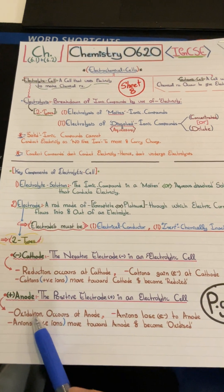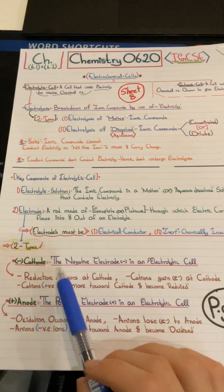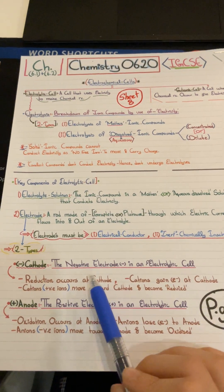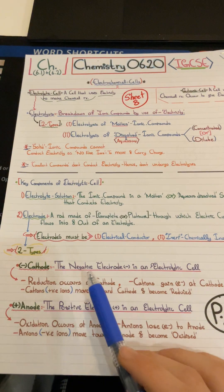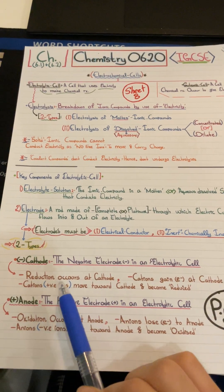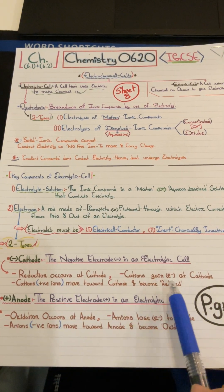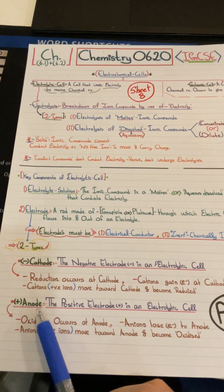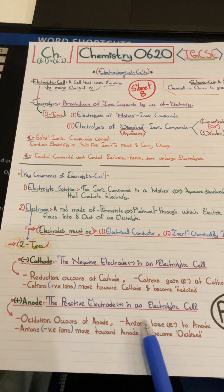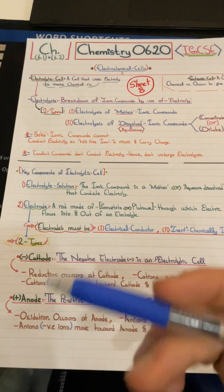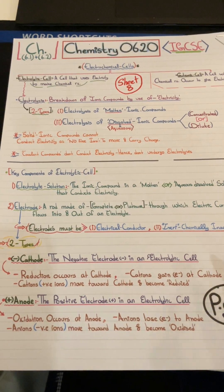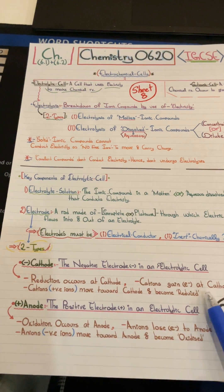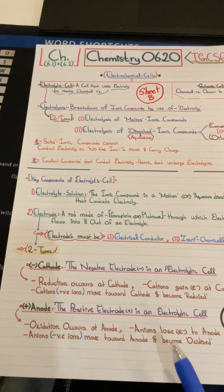The cathode is the negative electrode in an electrolytic cell. Reduction — the gain of electrons — occurs at the cathode. Cations migrate towards the cathode to gain electrons. The anode is the positive electrode. Oxidation — loss of electrons — occurs at the anode, and anions migrate towards the anode to lose electrons.